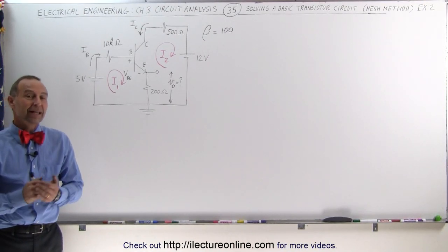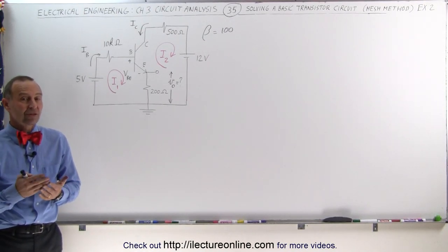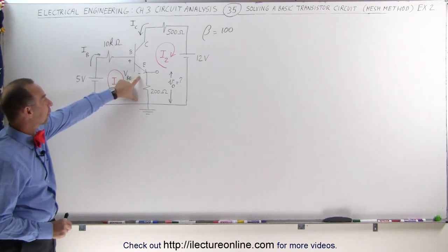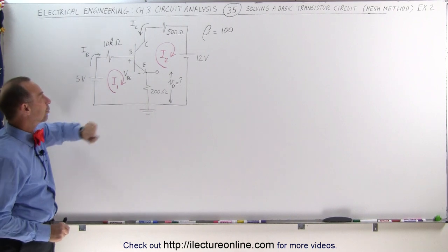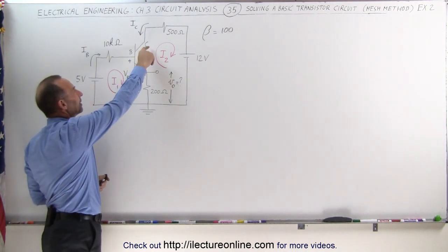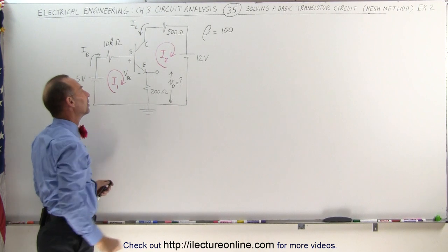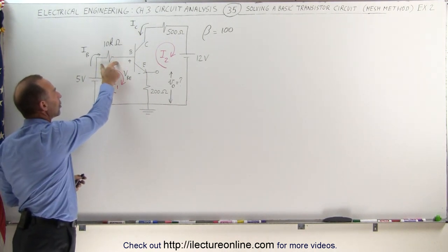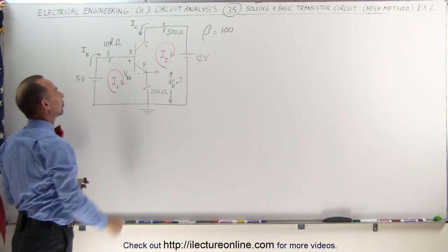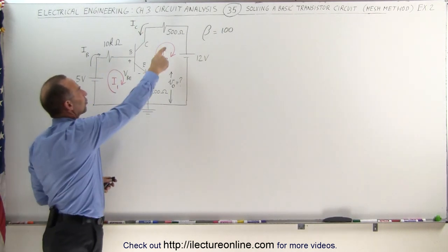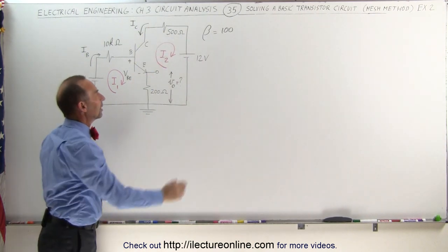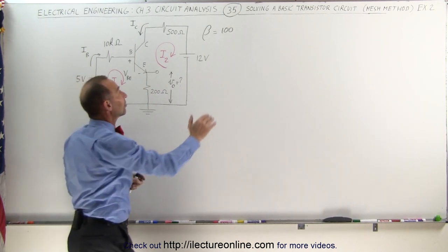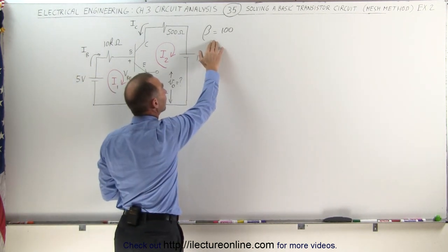Welcome to Electronline. Our next example for solving a transistor circuit is a little bit more challenging. What we're trying to do here is determine the voltage across this 200 ohm resistor and the voltage between C and E — the collector and the emitter. There's a 5 volt voltage source driving the base current, a 10k ohm resistor in the base circuit, a 500 ohm resistor in the collector circuit, and a 12 volt source driving current through the collector circuit. In this case, beta — the current gain — is 100.